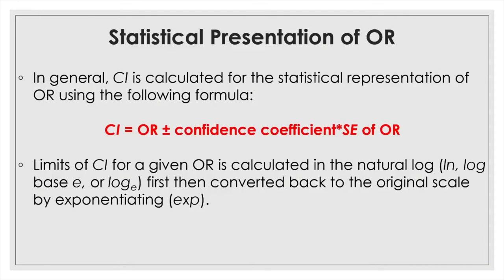The statistical representation of the odds ratio is essentially the same as the confidence interval of the mean. Even though the equation looks complicated, it is really the same: the confidence interval is the sample odds ratio plus or minus the confidence coefficient — 1.96 for 95% — times the standard error of the odds ratio.